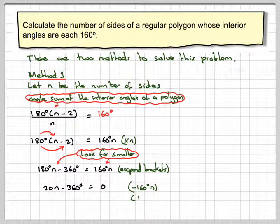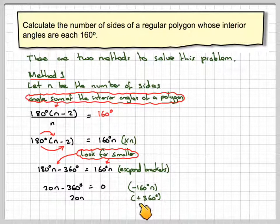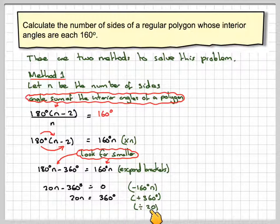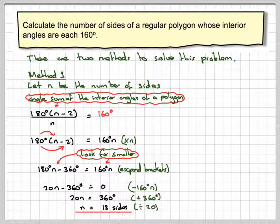We need to add 360 to both sides. So this side we're just going to get 20n. And this side we're going to get 0 plus 360, which is 360. Finally, we need to divide both sides by 20. And that's going to give that n is equal to 18 sides.